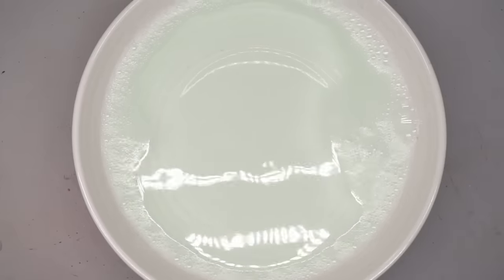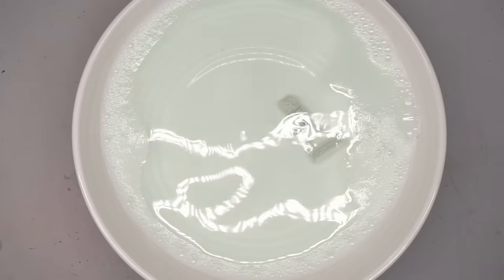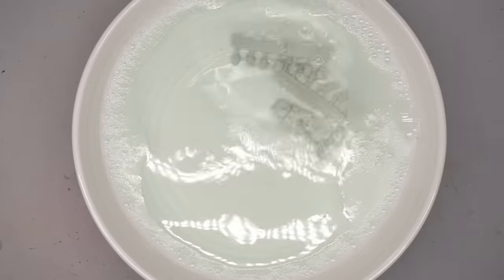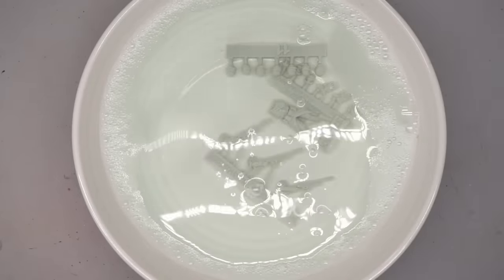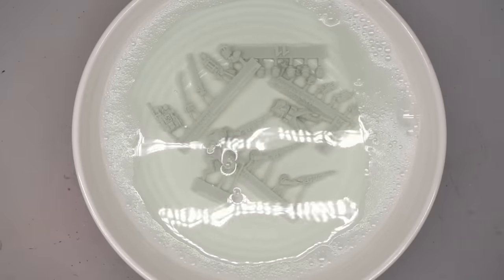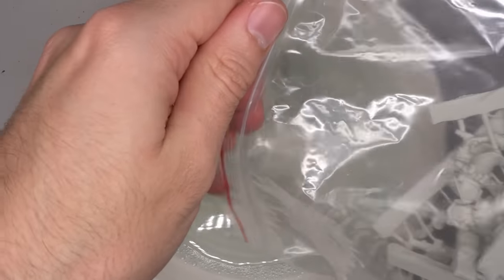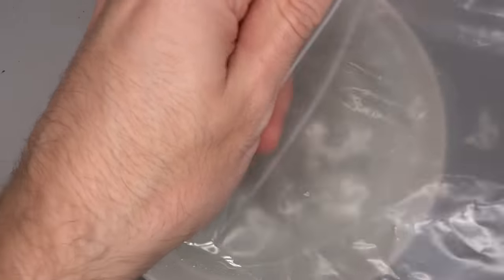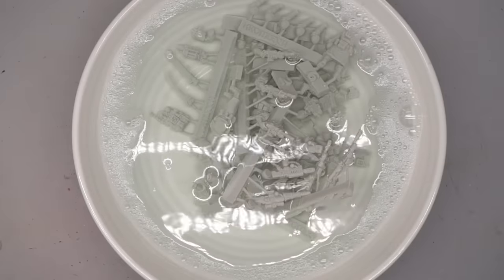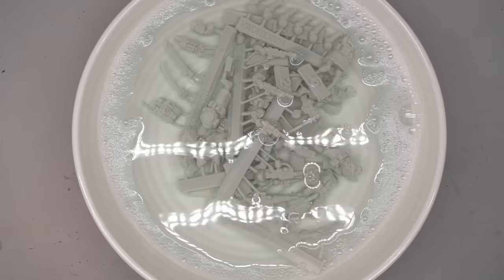But first, as these components are all resin, it's generally best practice to give them a quick wash first. A soak in some warm soapy water and a scrub with an old toothbrush will help to remove any remaining release agents from the surface. This can interfere with gluing and painting so it's best to get rid of it. After cleaning, the parts were allowed to dry and I was able to work on my 5 custom Astra Militarum regiments.